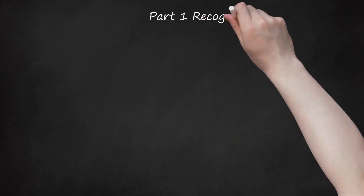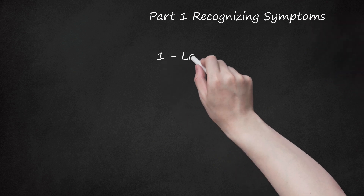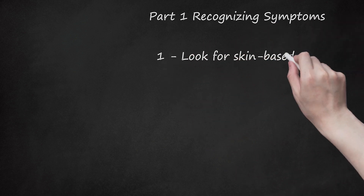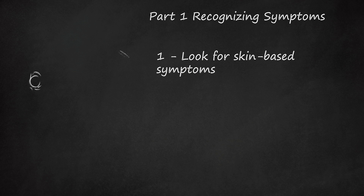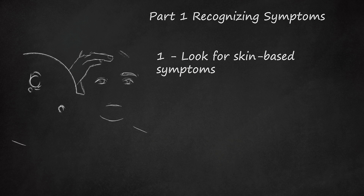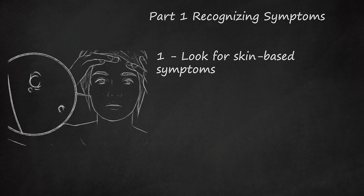Part 1: Recognizing Symptoms. Look for skin-based symptoms. Some of the most visible signs that can indicate staph infection are found on the skin. These will take the form of sores, rashes, or blisters that may be accompanied by discharge or pus. If you notice any of these skin conditions, it may indicate a staph infection.